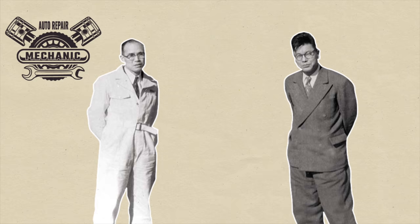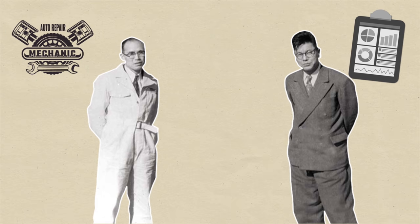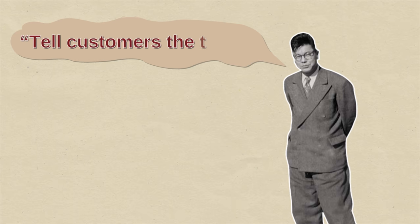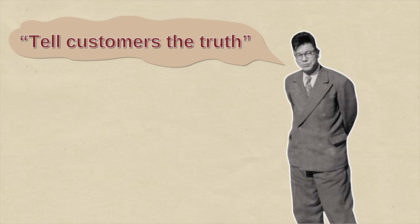Each sees in the other something they themselves don't have. Soichiro does the making. Takeo does the selling. Takeo is a marketing genius. He has a simple principle: tell customers the truth. They are a perfect combination.